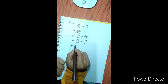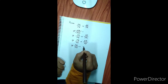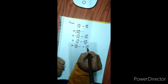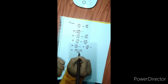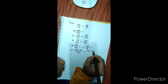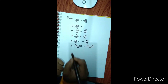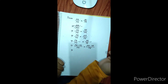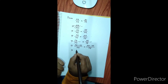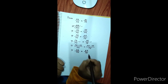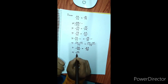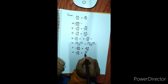PQ by PD minus 1 equal to PR by PE minus 1. Therefore PQ minus PD by PD equal to PR minus PE by PE. This gives us DQ by PD equal to ER by PE.